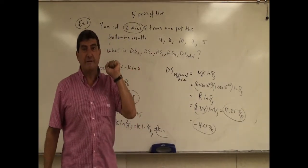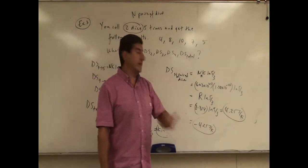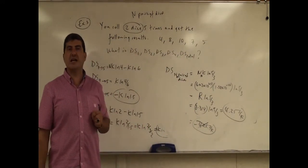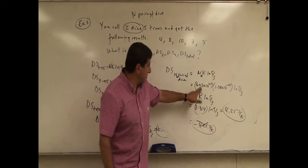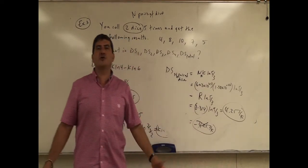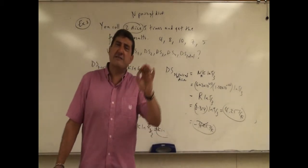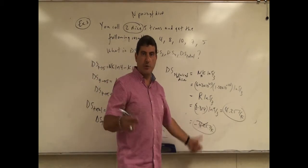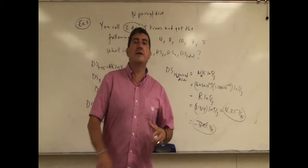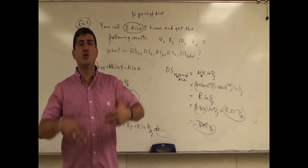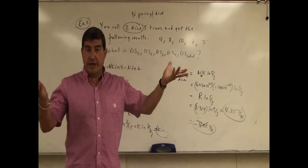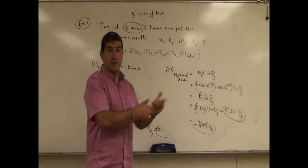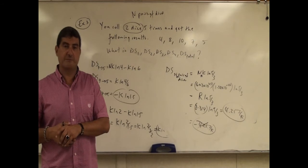If you roll Avogadro's number of pairs of dice five times, there's no way you're going to get a negative change in entropy. But if you only do one pair of dice five times, it is possible to get a very small negative change in entropy — not a whole number like 1, 2, 3, 4. With this example, you see the concept of entropy applied to macroscopic probabilities for two dice, for n number of dice, and why certain results are a lot more likely than others. Thank you very much.